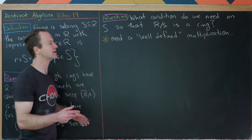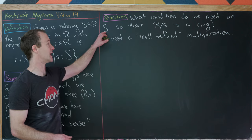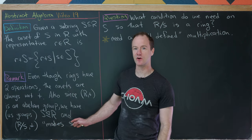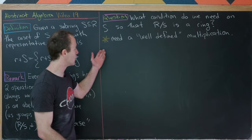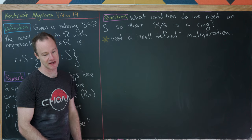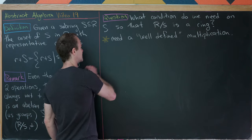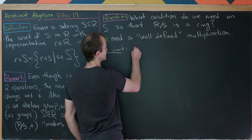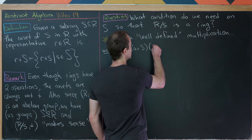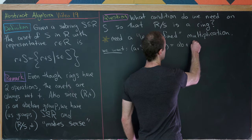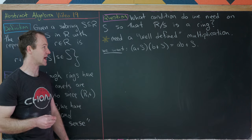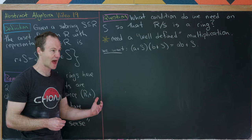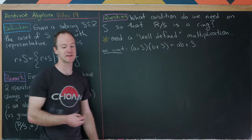This leads to a really important question: what condition do we need on S so that R mod S is a ring itself? Addition is already fine, so we just need to ensure well-defined multiplication. We'd like to define (a+S)(b+S) = ab+S, but we need this not to depend on the choice of coset representative.